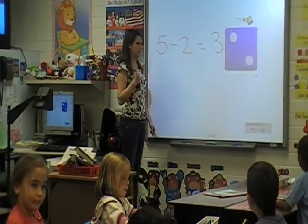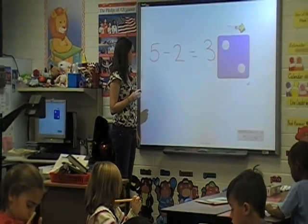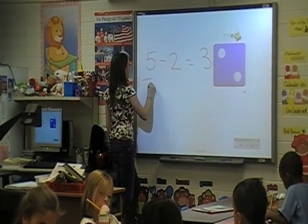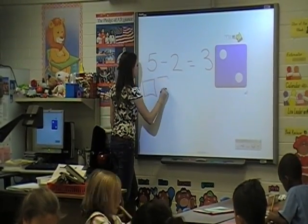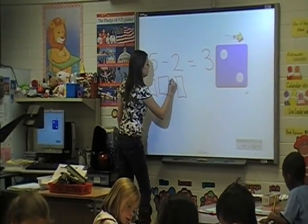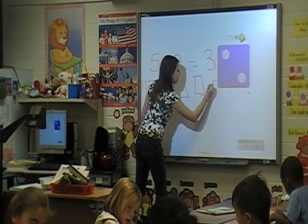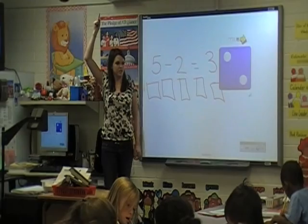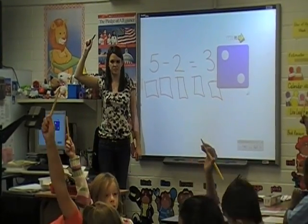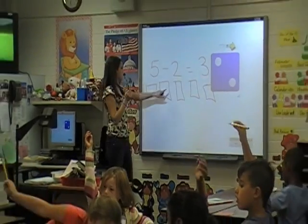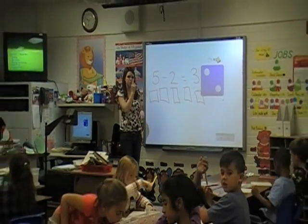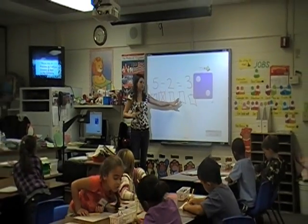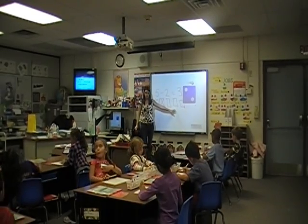Good job. Next I want you to draw five squares — we all know our squares. One, two, three, four, five. Hold up your pencil when you've got your five squares. Take away two, so we're going to cross out two of them. One, two. So we have three squares left, right? Yes.